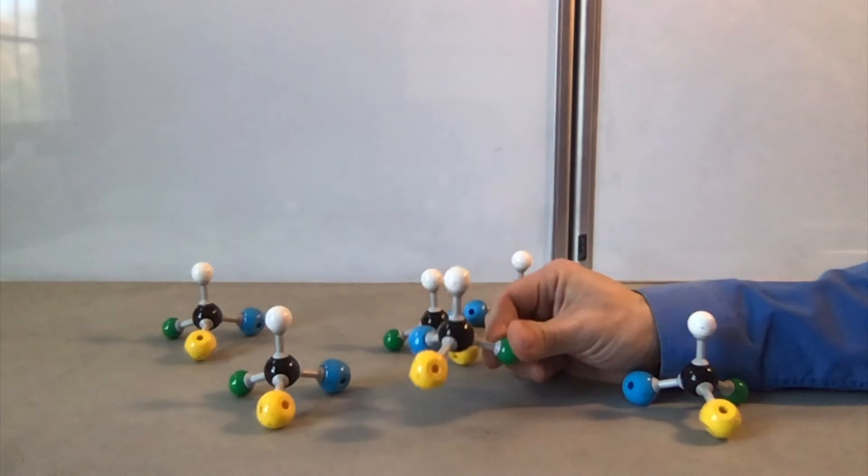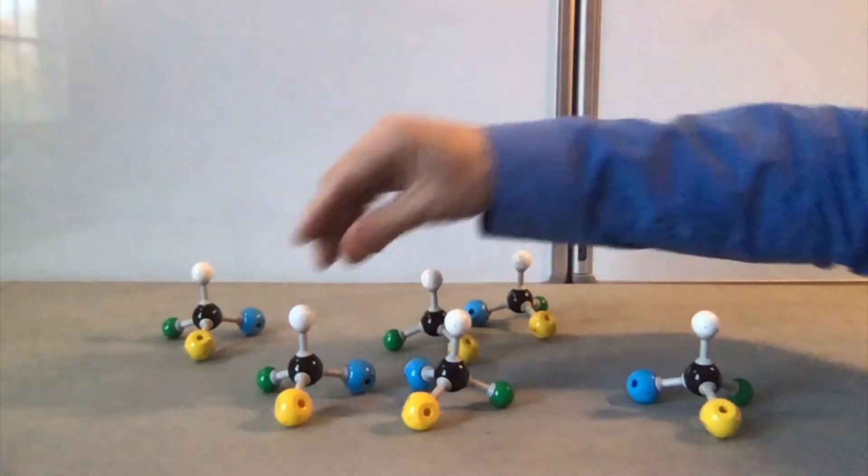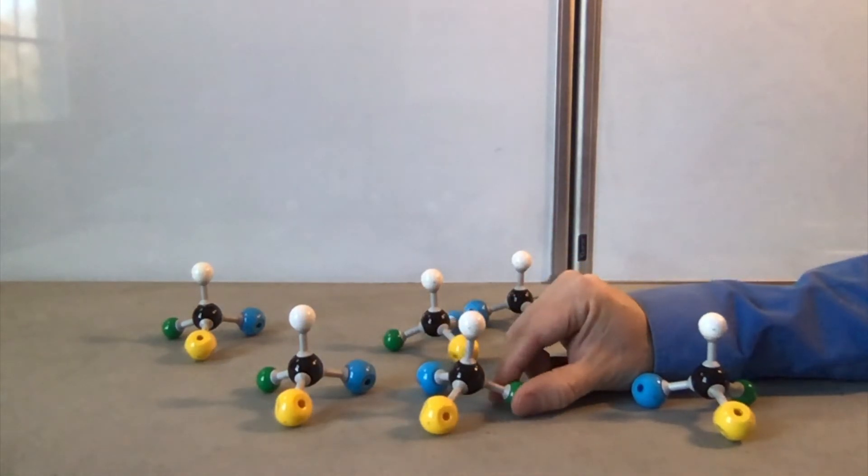So this is just the simplest example of enantiomers, molecules that are mirror images of each other and not the same molecule.